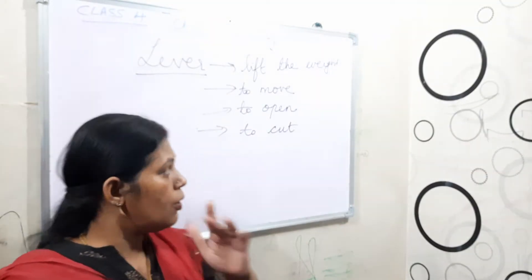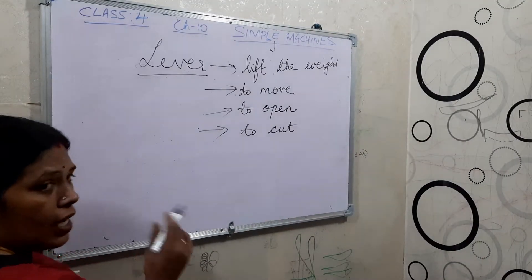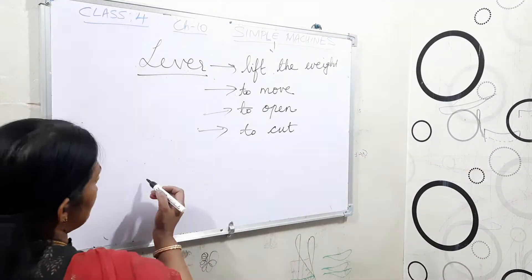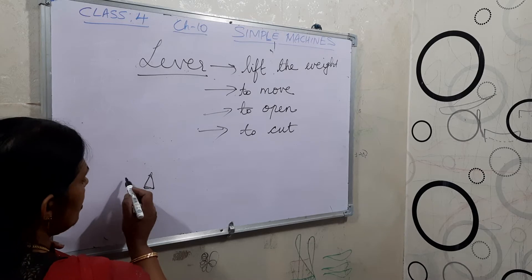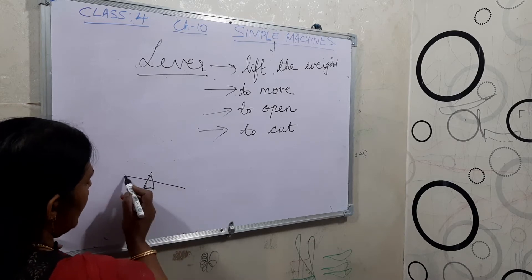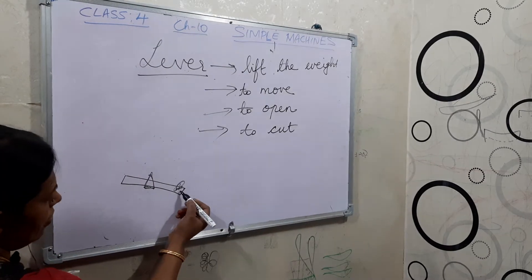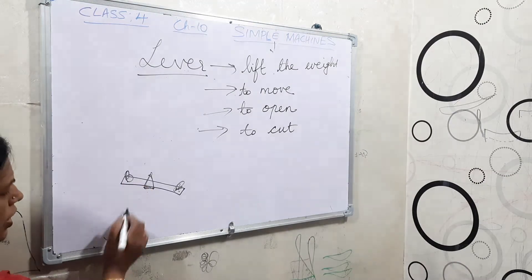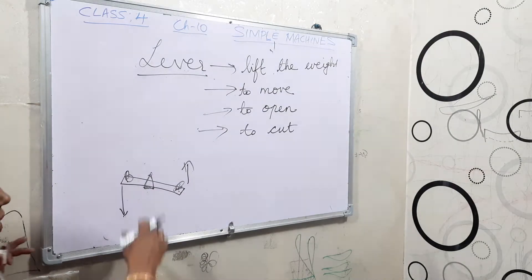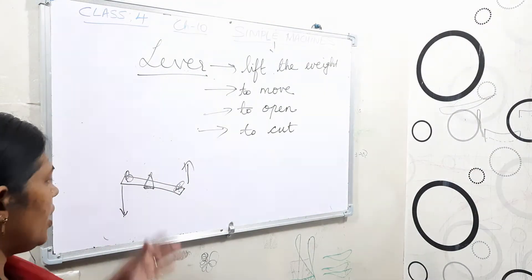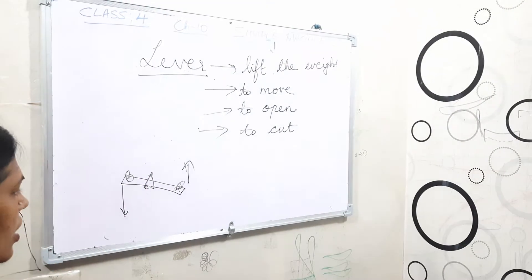Now let's explain how the lever lifts weight. For example, in the park when you are going, there you can see a seesaw. In a seesaw, one person will be down and another person will be up. If one person is sitting here and another person sits here, when this person comes down the other goes up — so that means lifting the weight. This seesaw acts as a lever.